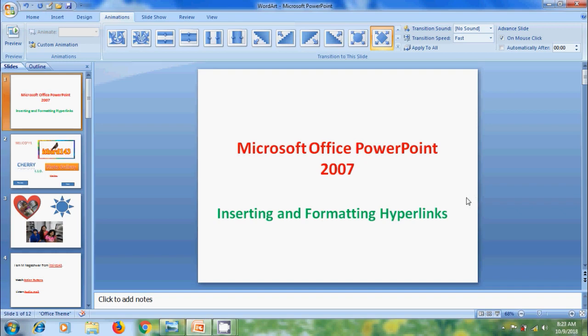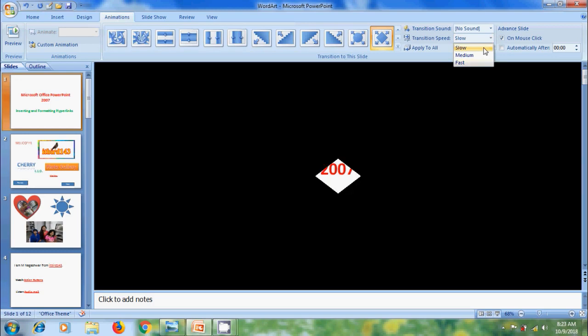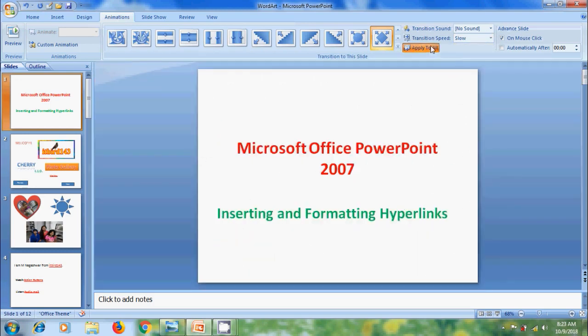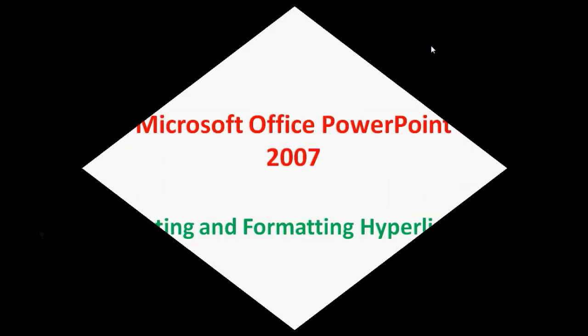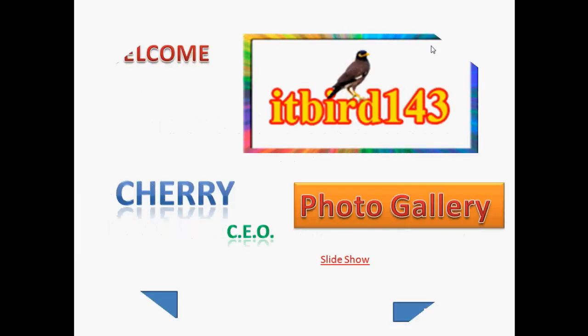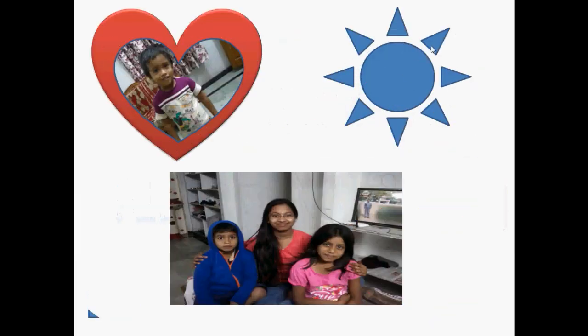But here the transition effect between the slides is so fast. To adjust the speed, come to Transition Speed to set how fast the transition should happen between slides. We can select slow, medium, and fast. Here I want to select slow. Click on Apply to All again, then run the slide show. Now we can clearly see the effect.